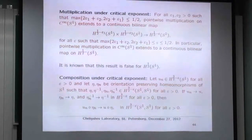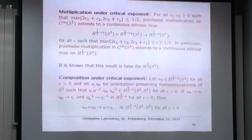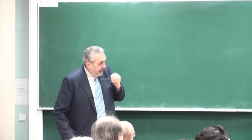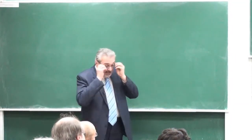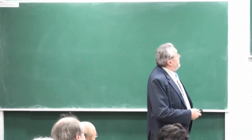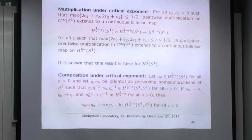Here is a multiplication theorem at the critical exponent: for all ε₁, ε₂ such that max(ε₁, ε₂) < 1/2, pointwise multiplication in C∞(S¹) extends to a continuous bilinear map in H^{1/2 − ε₁} × H^{1/2 − ε₂} → H^{1/2 − max}. In particular, pointwise multiplication extends to a continuous bilinear map in H^{1/2 − ε} for all ε. This theorem is known, but the only proof we know is in a book by Chemin on hydrodynamics and it's complicated. We have an elementary proof. The next result on composition is new — I checked with Klainerman and he didn't know it.